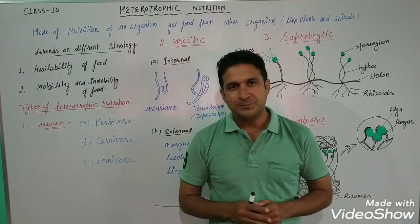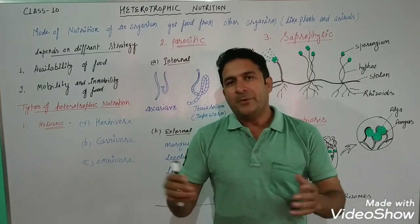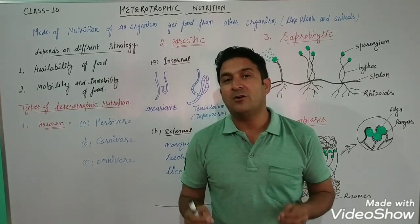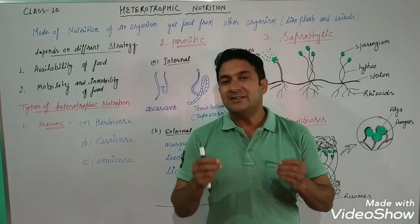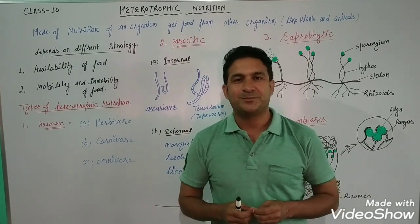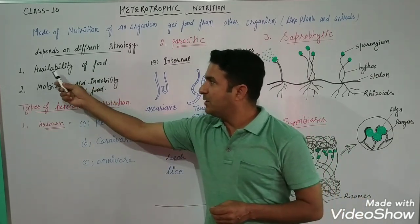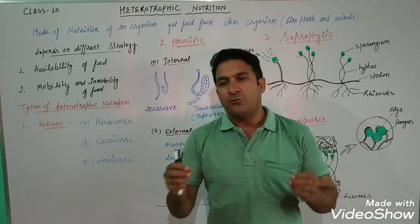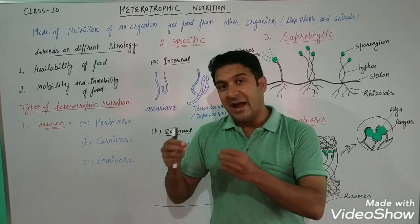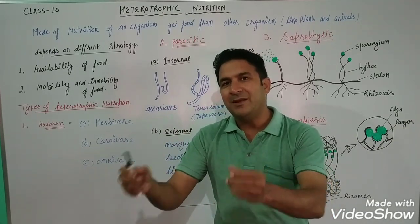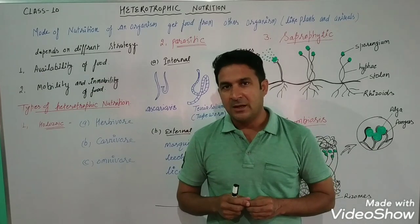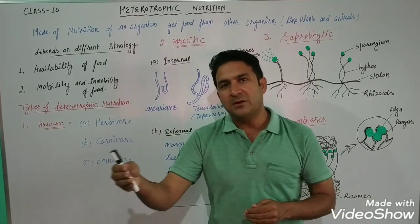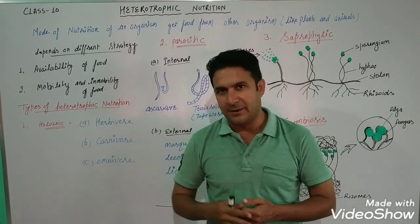To obtain food, heterotrophic organisms use different kinds of strategies, and these strategies depend on some factors. The first factor is availability of food. This factor is very important because wherever food is present, these heterotrophic organisms will go there to obtain it.